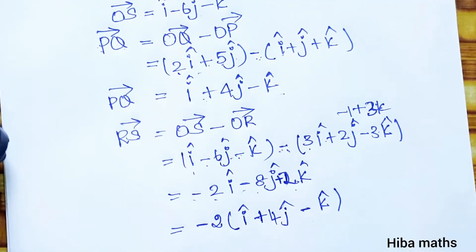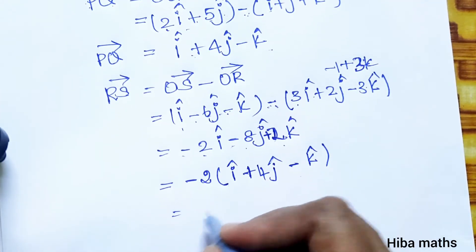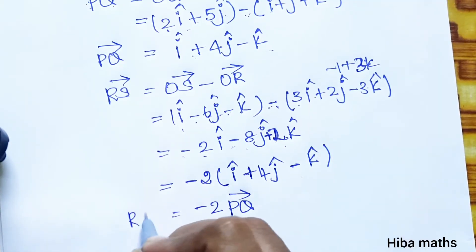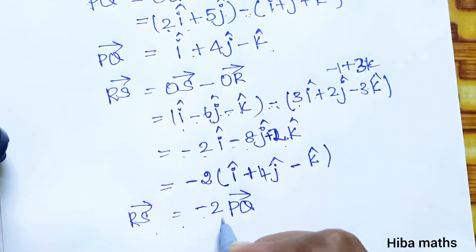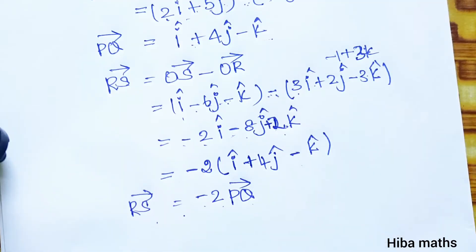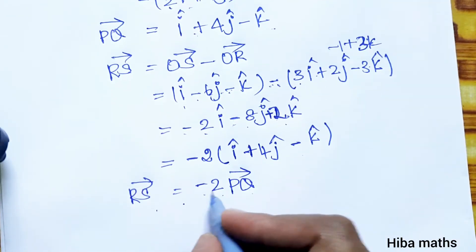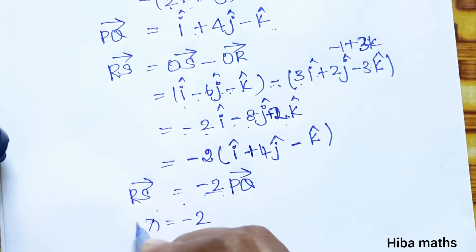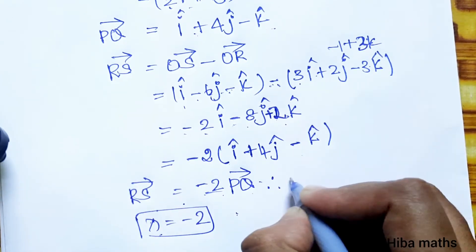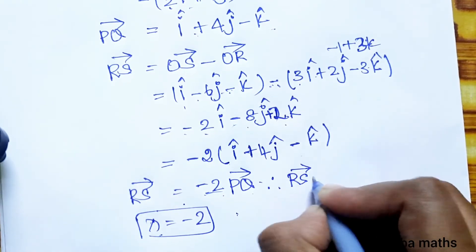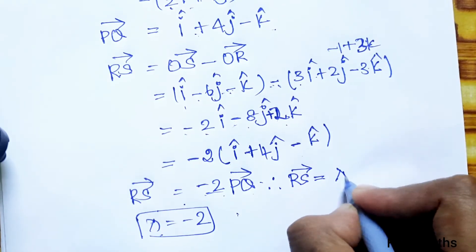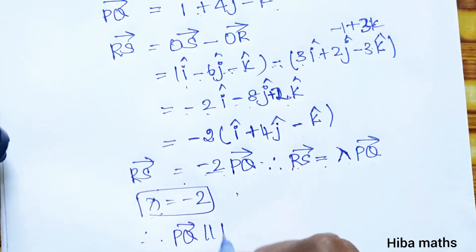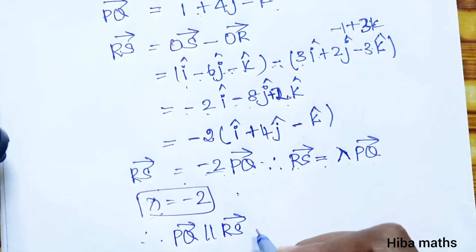Now, RS vector equals minus 2 into PQ vector. So RS is equal to lambda times PQ where lambda equals minus 2. Therefore PQ vector is parallel to RS vector. This proves that PQ and RS are parallel.